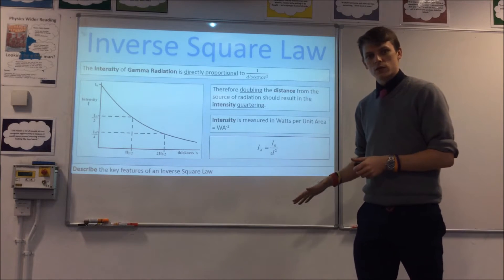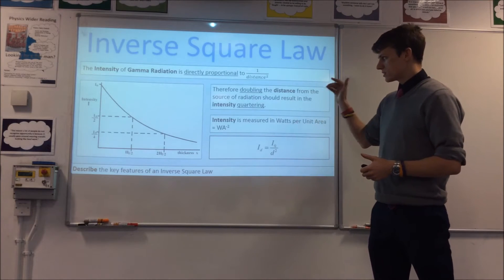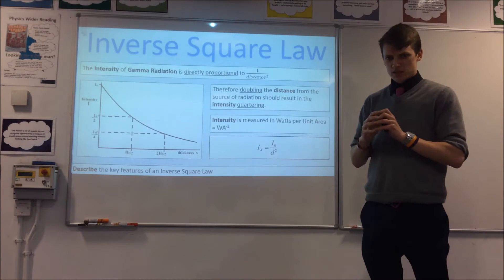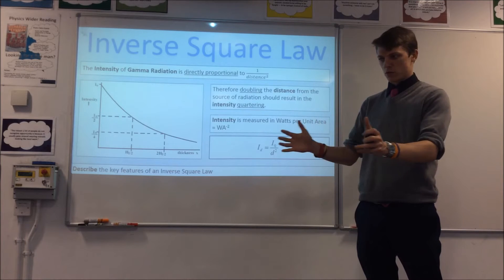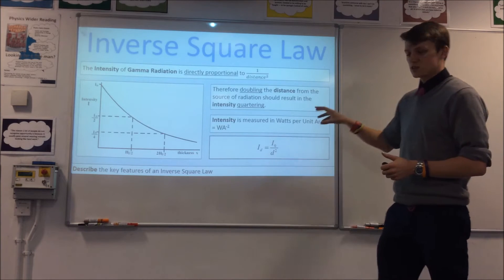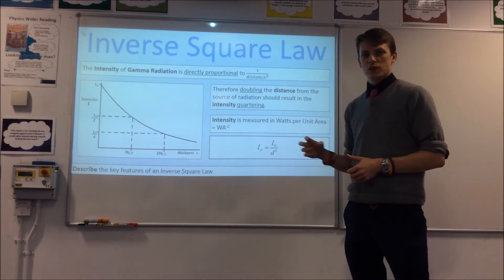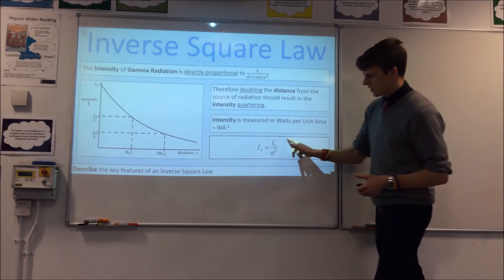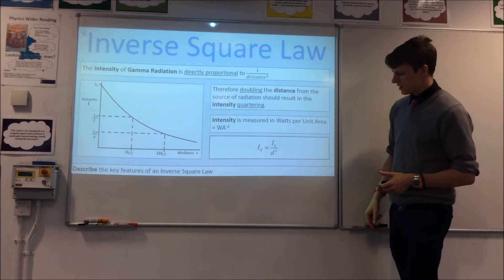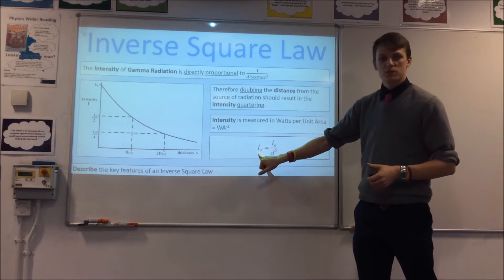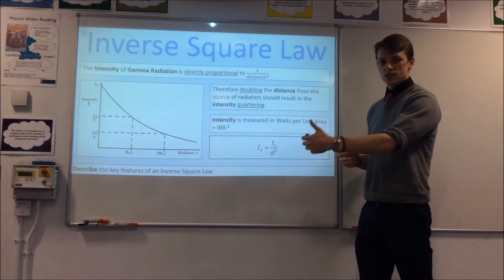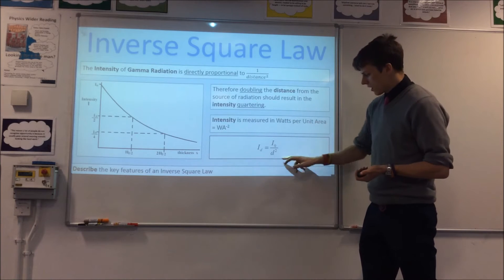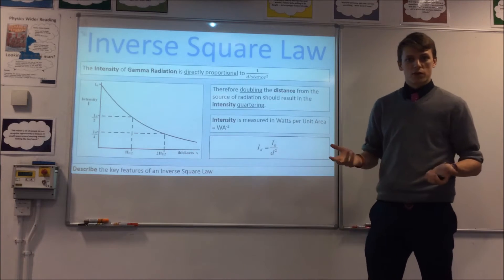Because it's an inverse square law, if you double the distance from the source of radiation and the source emits the same power over units of time, then the intensity quarters — the power per unit area quarters. We can express that in a general form: I_d is the intensity at distance d, I_0 is the intensity at distance zero, and d² is how far you are away.